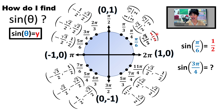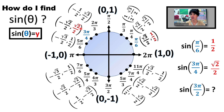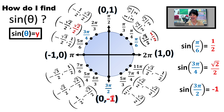How about sine of 3π over 4? We go to 3π over 4, and the answer is the y-coordinate, so the answer is √2 over 2. One more: the sine of 3π over 2. Going there to 3π over 2, the y-coordinate is negative 1, so the answer to sine of 3π over 2 is negative 1.